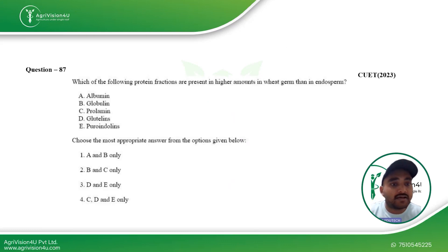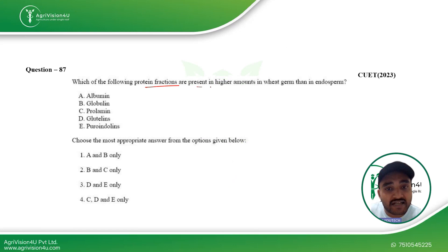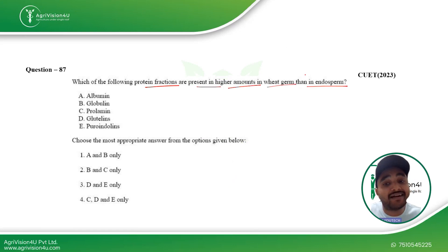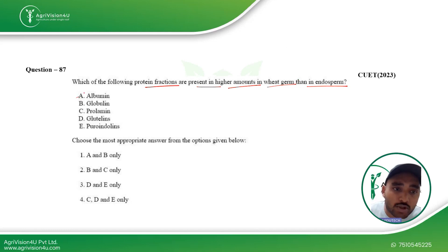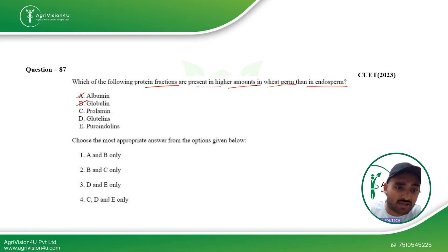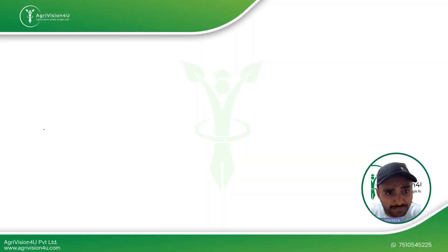Which protein fractions are present in higher amounts in the wheat germ than in the endosperm? They are asking about wheat germ specifically rather than the whole wheat structure. Albumin and globulin — options A and B — are the right answers for this question.